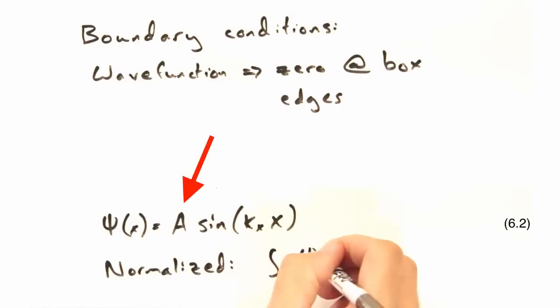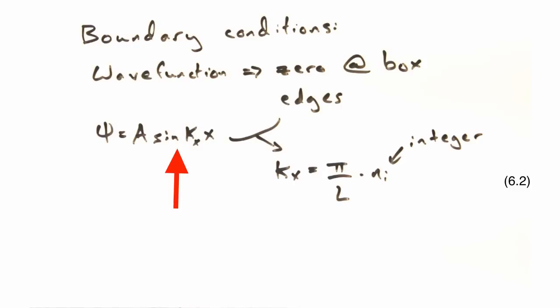This pre-factor comes from normalizing the integral of psi star psi to one. And because our wave function is made of sine waves, we can then put limitations on our k vectors that goes as pi over the length of our box times some integer ni. Now we have an expression for k, we should think about what values we can use for ni.